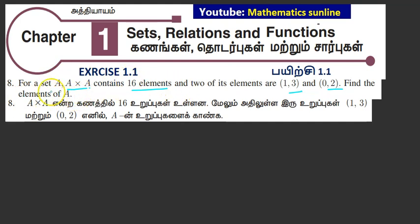A cross A has 16 elements, 2 pairs are given. Find the elements of A.